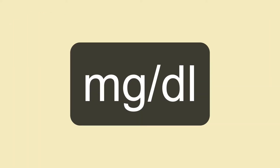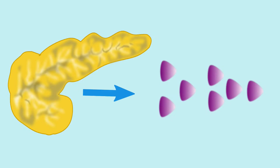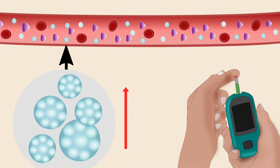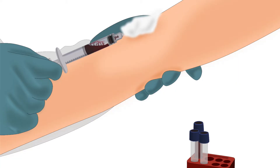Mg per dl stands for milligrams per deciliter. This range is maintained by the insulin hormone produced by the pancreas. Insulin is explained in detail in another tutorial in the same series. Please visit our website for more details. Let us discuss the traditional definition of diabetes, which is based on blood glucose levels.